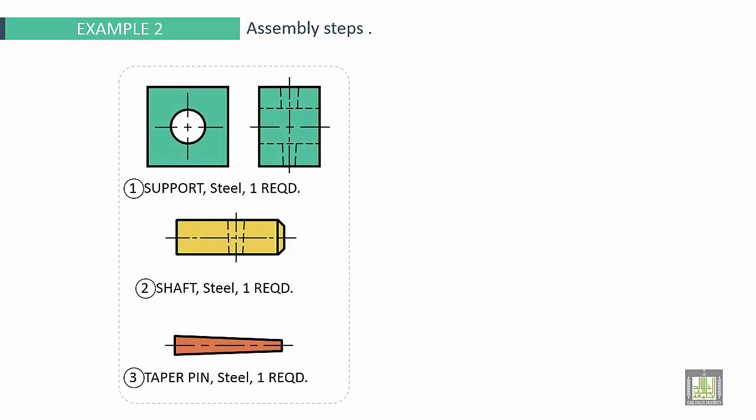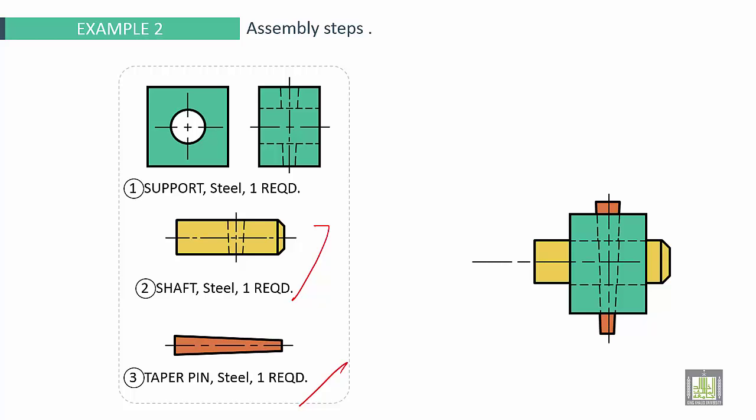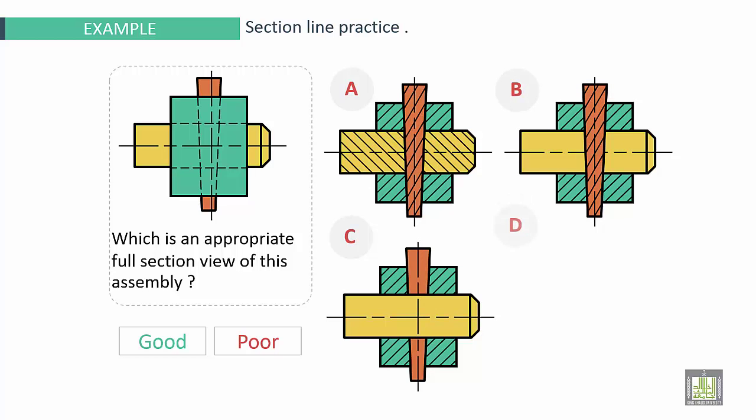Here another example. The taper pin, it is a standard part. This also shaft for this assembly. If we make assembly, this shaft here in the support and the taper pin. Now if we use section. First possibility, second possibility, third and fourth possibility. Which is good? So A it is poor, not good. B too, it is poor. C, it is poor also but better than A and B. So D it is the best one. If we make off the colors, we'll see here. So do not make etching for standard parts here and for the shaft. This one it is good. This one not.